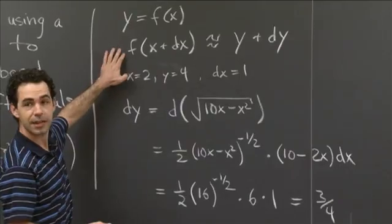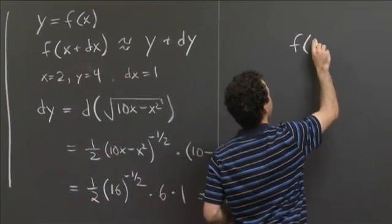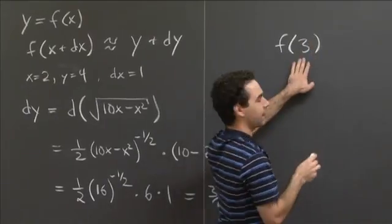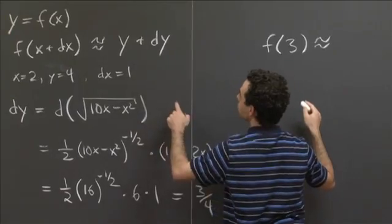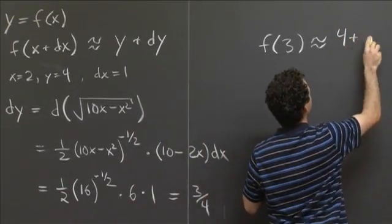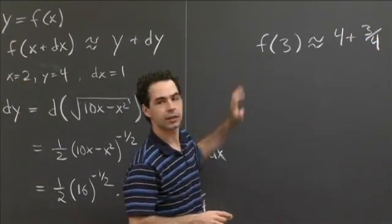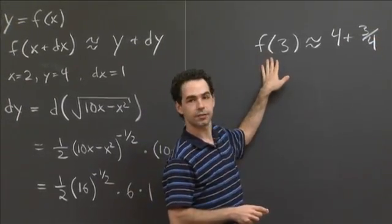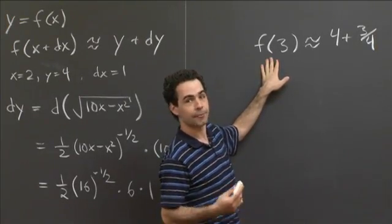So that means our linear approximation that we're after is f(3). f(x + dx) is approximately equal to our value y at our original point, which was 4, plus dy, so plus ¾. The linear approximation that we get from this method of differentials is exactly the same approximation we would get if we did this the other way.